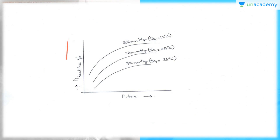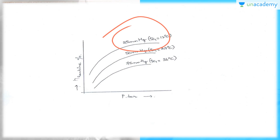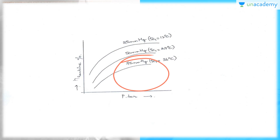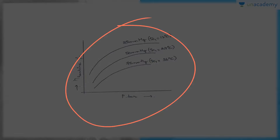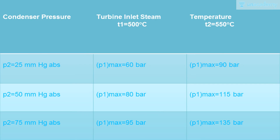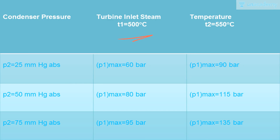You can see on 25 mm of Hg, on 50 mm of Hg, and on 75 mm of Hg the various curves obtained in this graph. This is a table regarding the condenser pressure as shown in the graph, and how much the turbine inlet steam temperatures will be when T1 is 500 degrees centigrade and T2 is 550 degrees centigrade. You can follow this table.